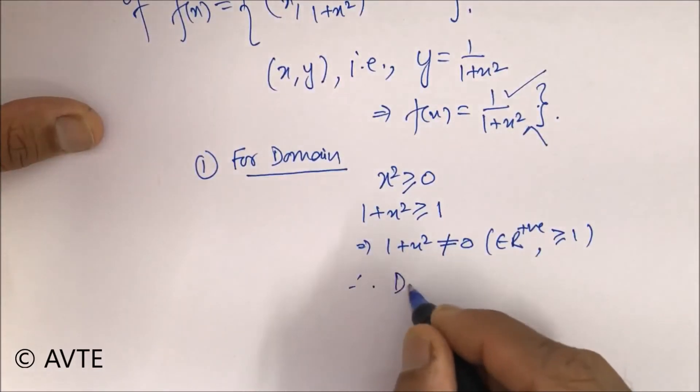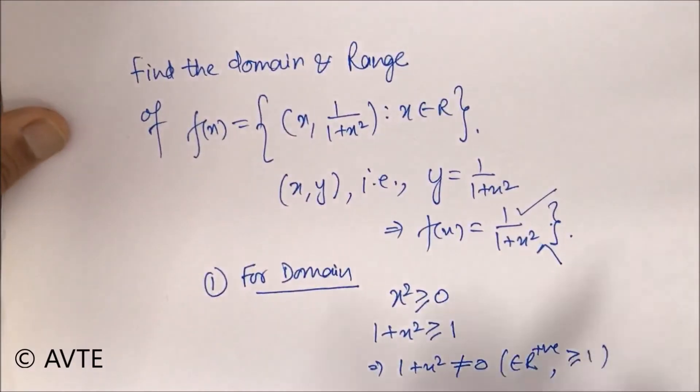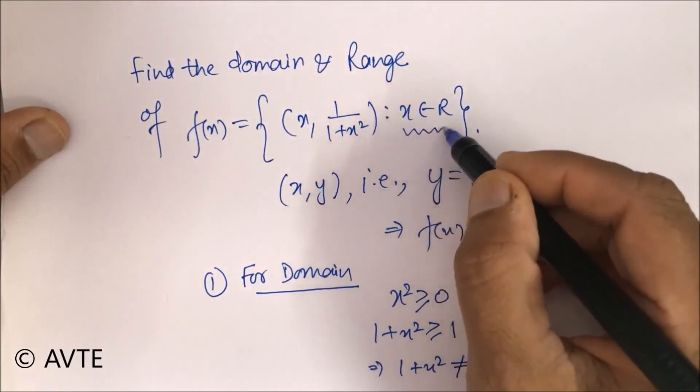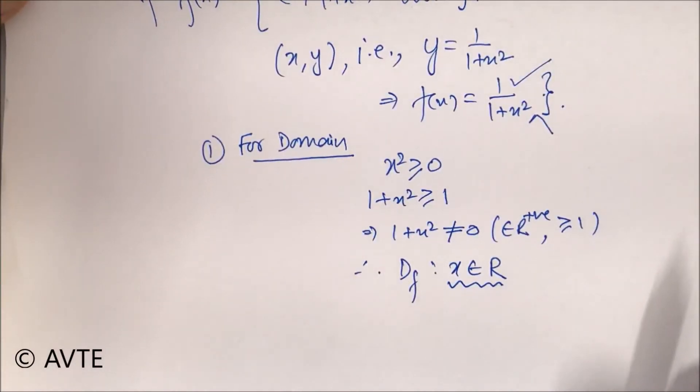Therefore, the domain of the function is x is belonging to R. And you can also take a hint from whatever is given to us that x is belonging to R. So the domain of the function is x is belonging to R.